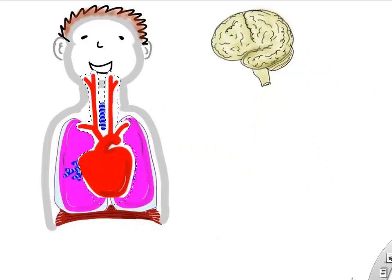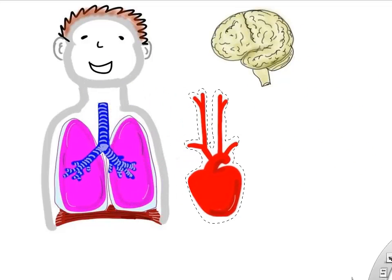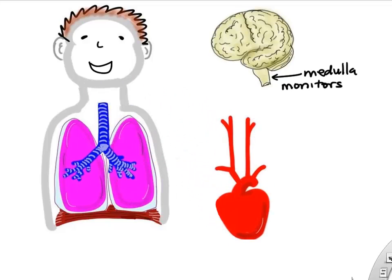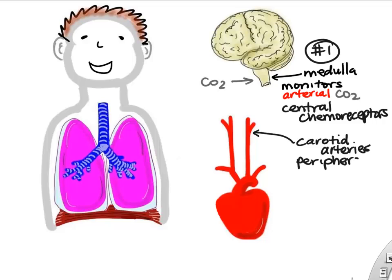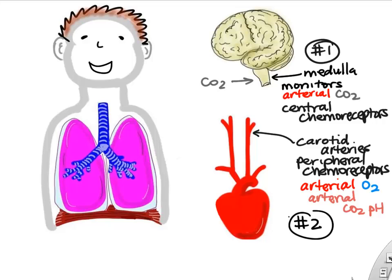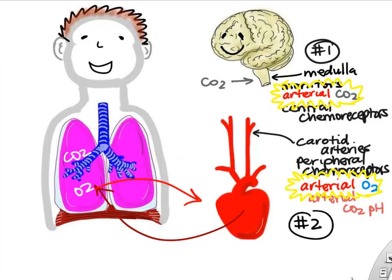The heart pumps blood to our lungs and that blood returns to the heart and is pumped throughout the body including our brain. The medulla oblongata has neurons called central chemoreceptors that monitor arterial CO2 levels — these are probably the most important in regulation of ventilation. The carotid arteries have peripheral chemoreceptors that monitor oxygen levels and send signals back to the medulla, making them the second most important in regulating ventilation.